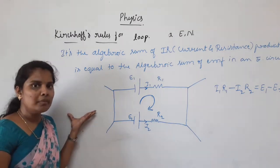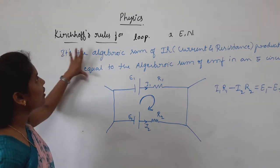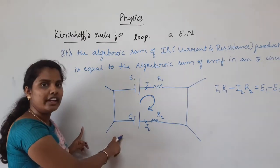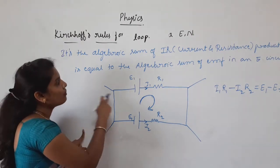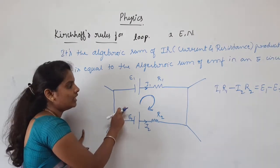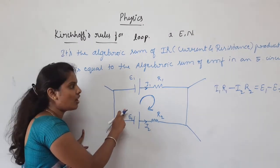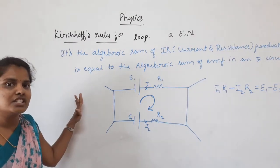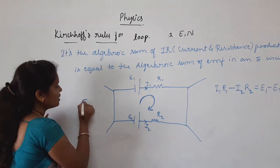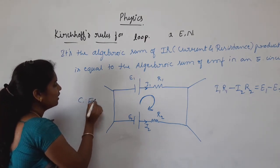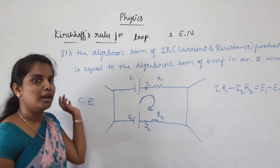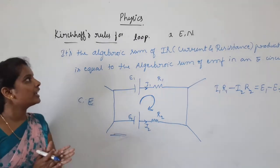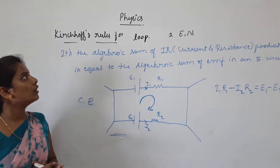Kirchhoff's loop rule works on the basis of the principle of conservation of energy. Kirchhoff's junction rule works on the basis of the principle of conservation of charge. These are the principles underlying Kirchhoff's rules for loop and junction.